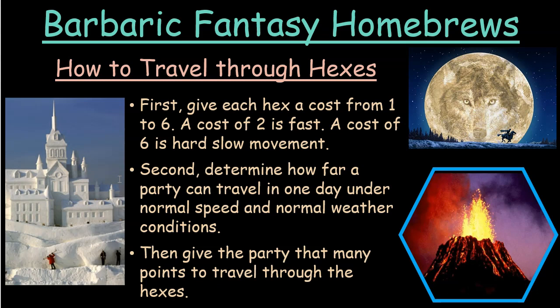Each hex has a cost representing how long it takes to travel through it. You determine how far the party can travel in one day under normal speed and normal weather, and that's how many points of travel time you give the party. If they walk 15 miles a day, give them 15 points. On horses doing 24 miles on a flat road, give them 24 points. Flying birds doing 60 miles a day, give them 60 points. Just match their travel mode to the point total.